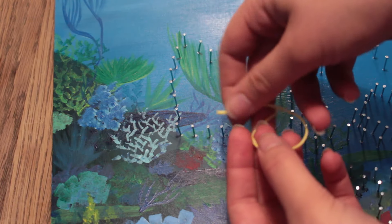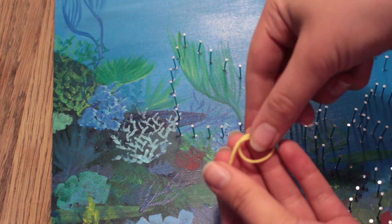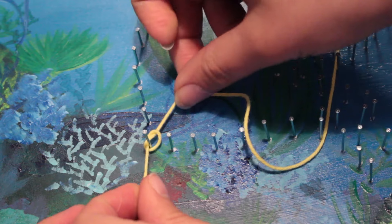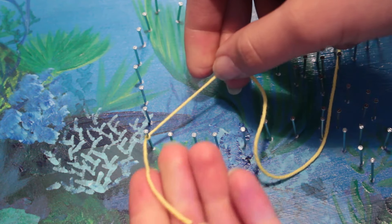Now take a piece of yarn in the wanted color and then tie a knot around one of the nails. Pull really hard so the knot and the yarn won't go anywhere when you work with it.